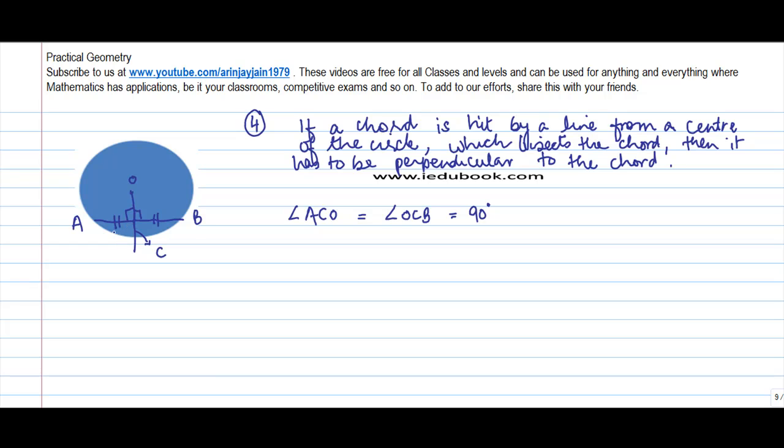This is the converse of what we saw in the previous theorem. So let's see how we can prove it. The first thing we do is we construct OA and OB. We know OB is equal to R, OA is equal to R.